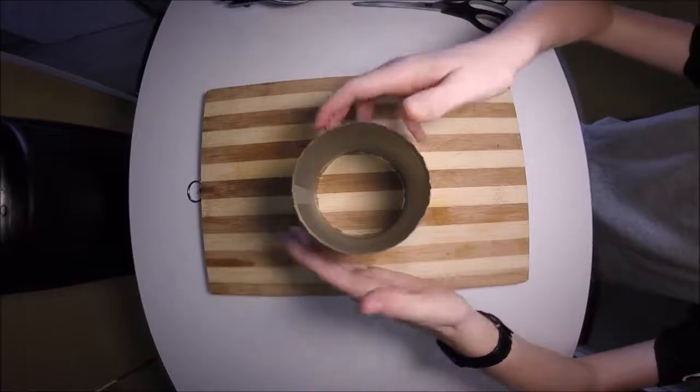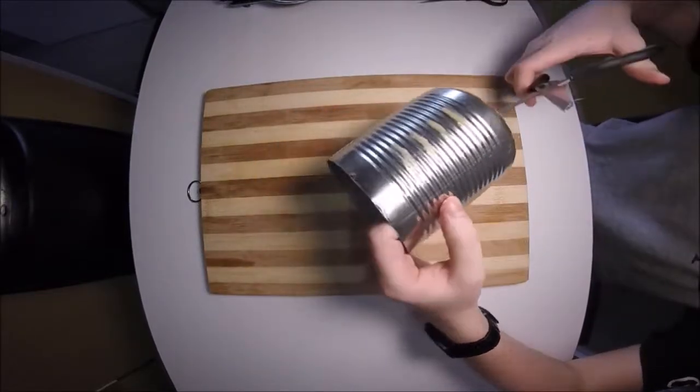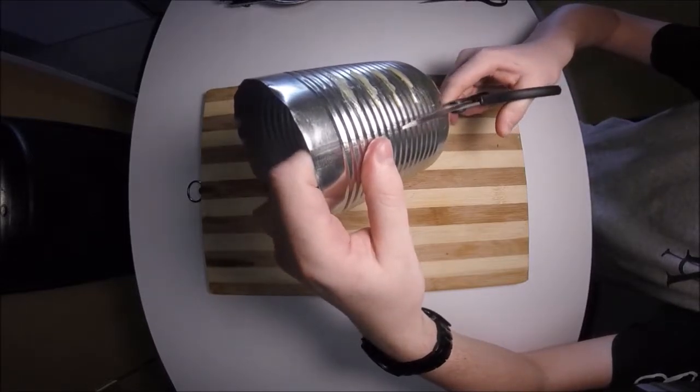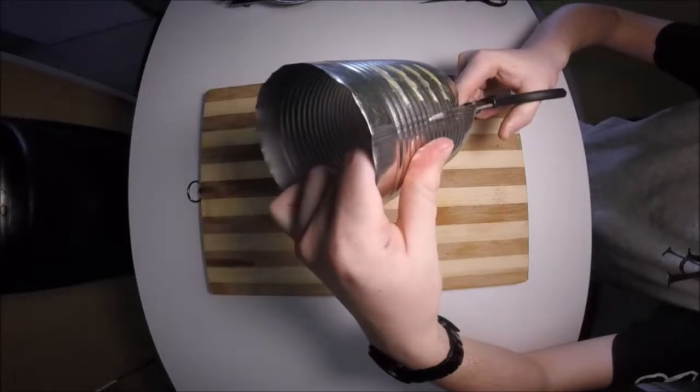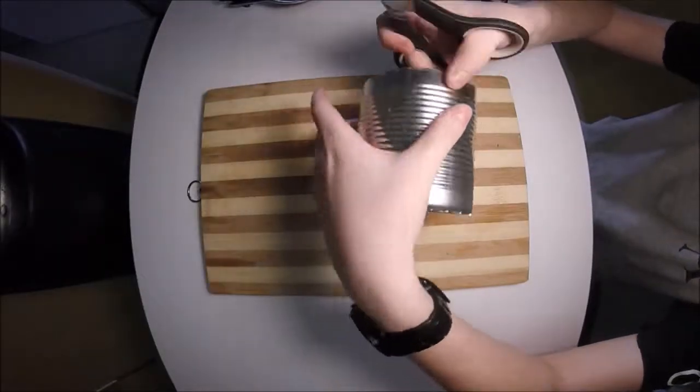The following step is to look for the little line along the can—this is the seam of the can. Take your scissors and cut along the seam, starting at the bottom or top, but cut halfway. Don't try to cut too far as it becomes difficult and easy to miss the line.